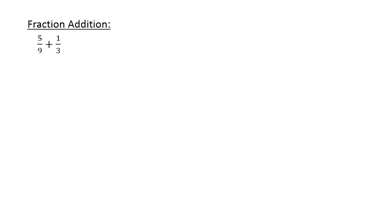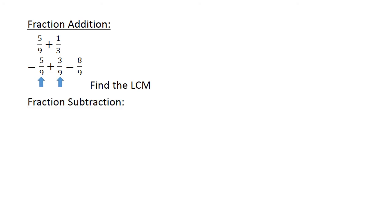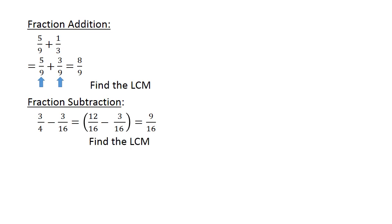Fraction addition: 5 over 9 plus 1 over 3 equals. You have to find the lowest common multiple first. 1 over 3 equals 3 over 9. Now you can add: 5 plus 3 equals 8 over 9. Fraction subtraction: 3 over 4 minus 3 over 16. Find the lowest common multiple. 12 over 16 minus 3 over 16 equals 9 over 16.